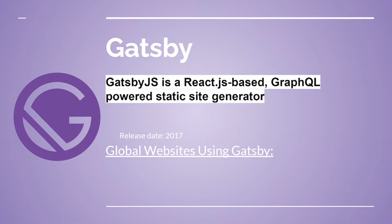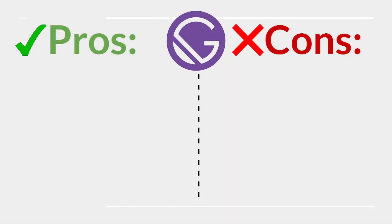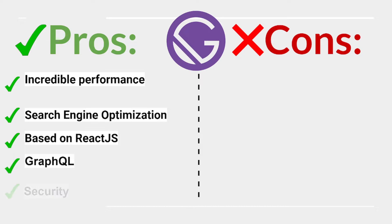Gatsby.js is a React.js-based, GraphQL-powered static site generator, released in 2017. Global websites using Gatsby include Snapchat and Tinder. Pros: incredible performance, search engine optimization, based on React.js, GraphQL power, and security.